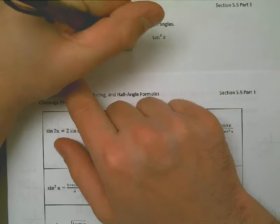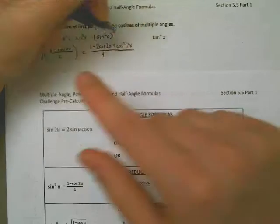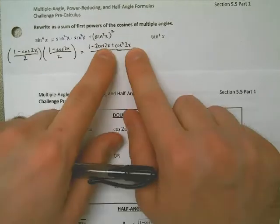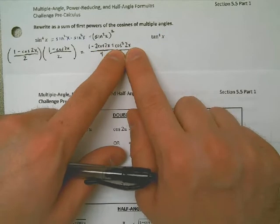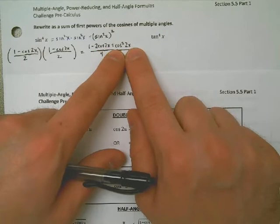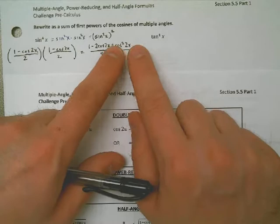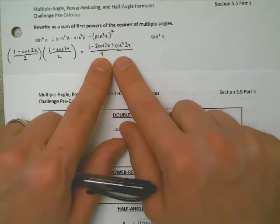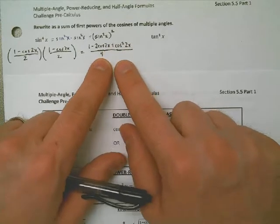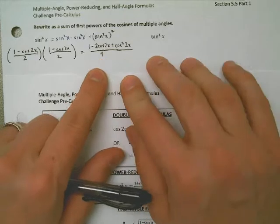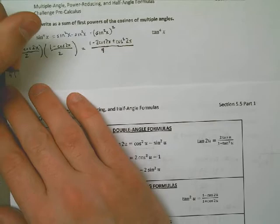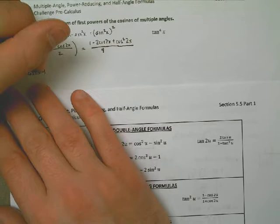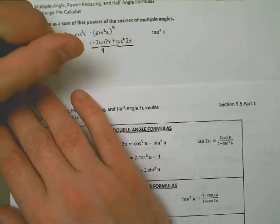Now, it would be nice if we were done, but the problem is this. See, we're okay writing cosine of 2x. That's okay. That's a multiple angle. It's allowed, according to the instructions. But I still have a cosine squared that I need to get rid of. I'm going to do us a favor real quick. Instead of dividing by 4, I'm going to write this as 1 fourth times. So I'm going to pull the 4 off to the side. I'm going to rewrite it as 1 fourth times 1 minus 2 cosines of 2x plus the cosine squared of 2x.